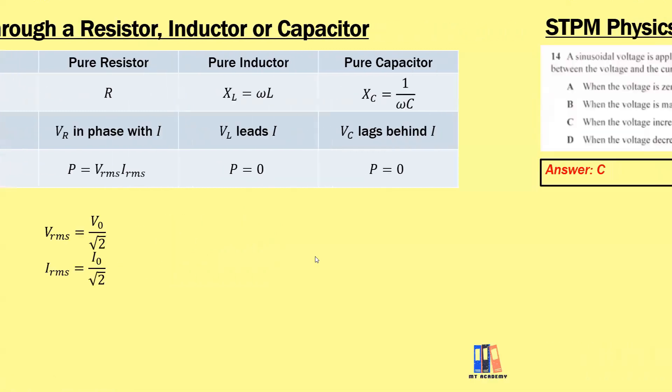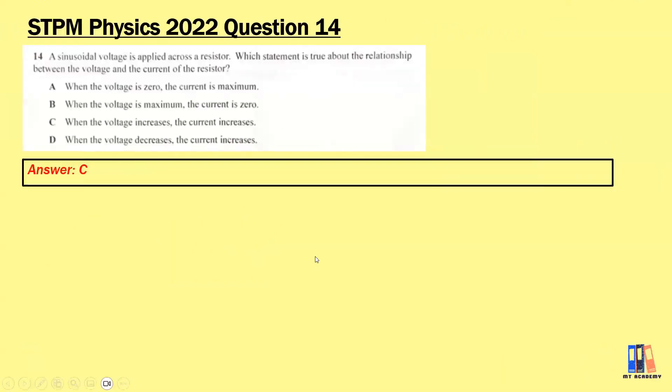Let's go through the past questions. First is from 2022 Question 14: A sinusoidal voltage is applied across a resistor, which is true about the relationship between the voltage and current of the resistor? This is quite simple because we know they are in phase. So the answer is C: when the voltage increases, the current increases. When the voltage decreases, the current also decreases. That's the relationship between voltage and current for the resistor.